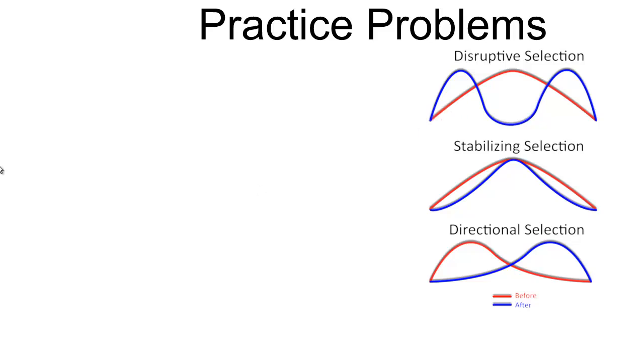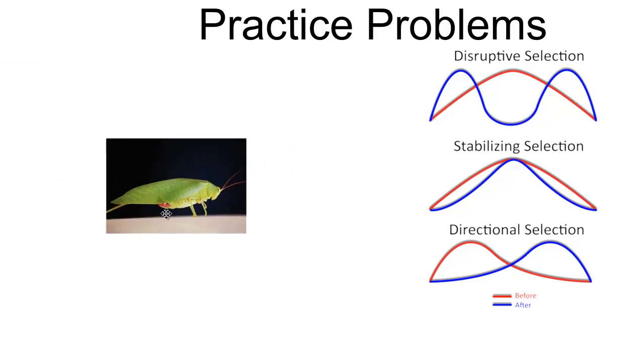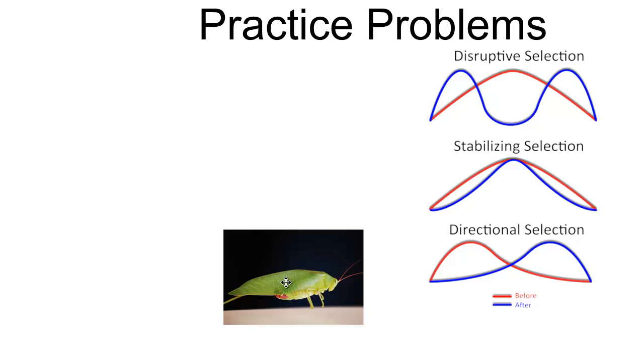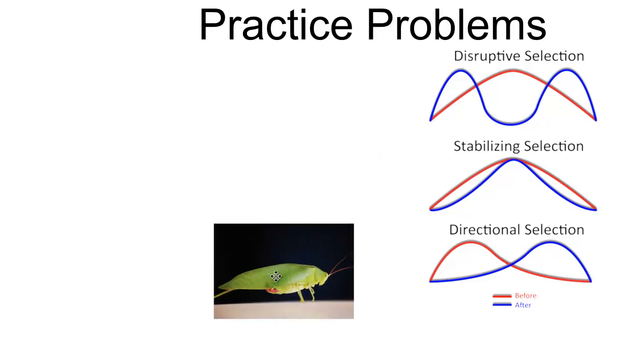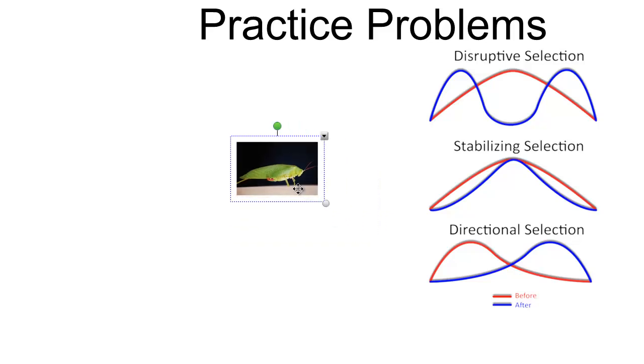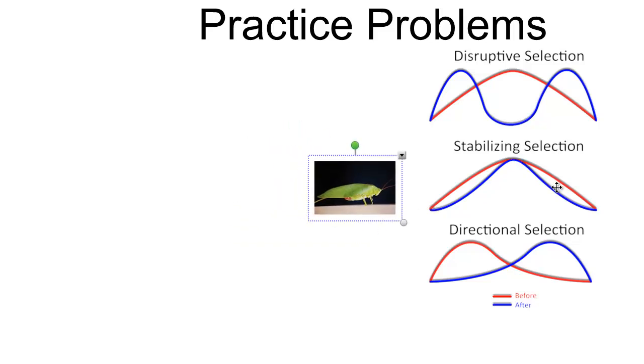Let's think about some examples. These could be practice problems. So the katydid. We had pink, yellow, green katydids. And over time the katydids, the selective pressures pushed the katydids to almost all be green. Which kind of selection is this? If you said stabilizing selection you were correct because it favored those that were in the middle rather than those that were on the extremes.